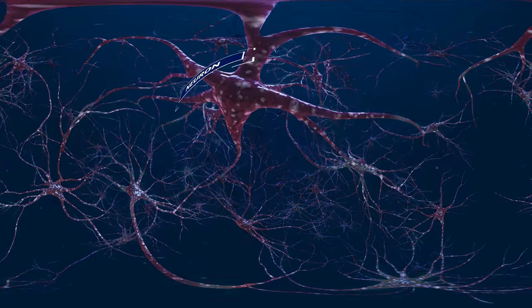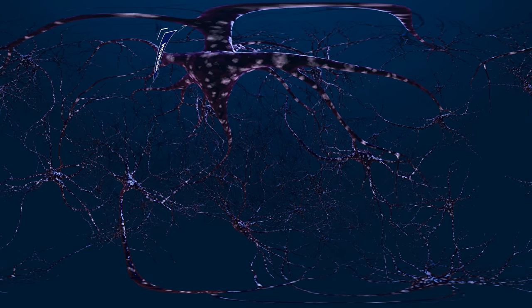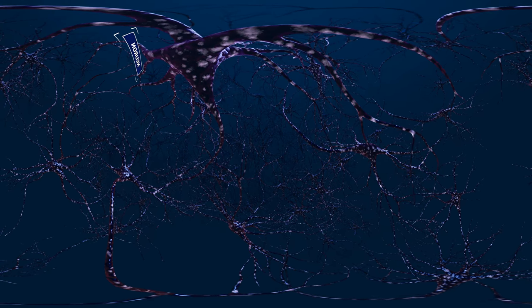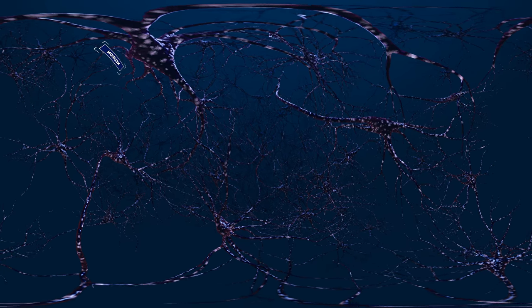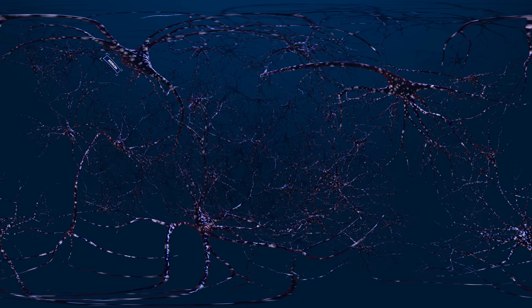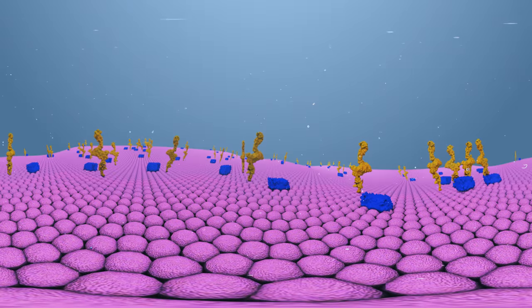Alzheimer's disease slowly destroys those networks, breaking down the ability of neurons to communicate and eventually killing them. It's not clear what causes Alzheimer's, but here's a look at two microscopic changes in the brain that are believed to contribute: the accumulation of plaques and tangles.